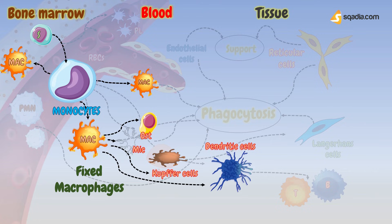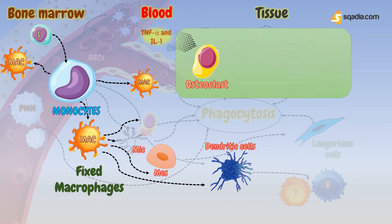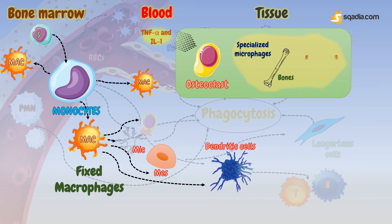Osteoclasts: the most specialized macrophages are the osteoclasts, found in bone, which participate in regulating calcium metabolism by resorbing bone and releasing calcium into the blood. This process is regulated by cytokines such as TNF-alpha and interleukin-1, and is thought to have a role in degenerative diseases of joints such as rheumatoid arthritis.